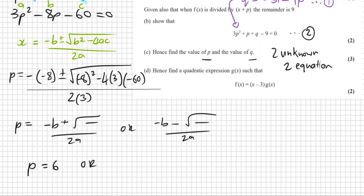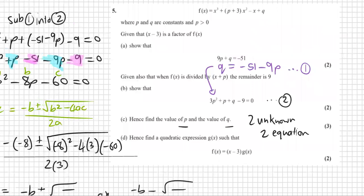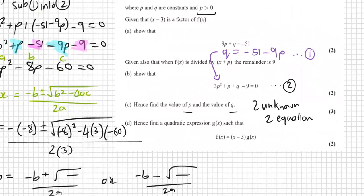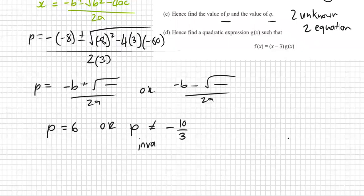So when I put this in my calculator, I get P is equal to 6 is one of them. P is equal to negative 10 over 3. Well, let's just quickly check our requirements and see. We had a requirement that P needs to be positive, larger than zero. So this one's invalid. P equals 6 is the only valid answer. Great.